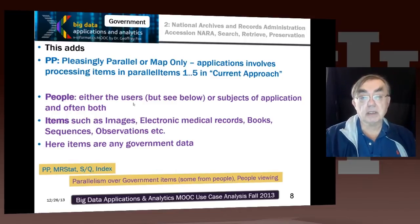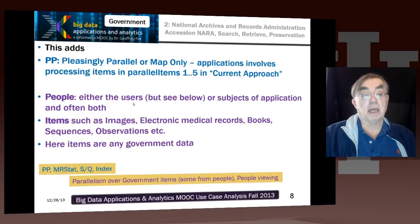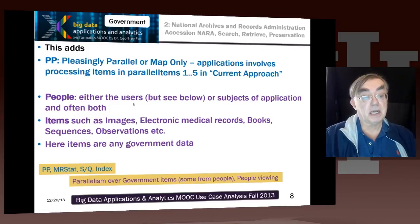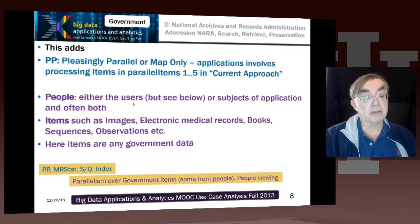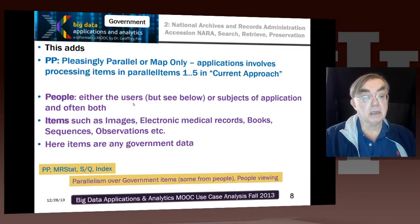Here we have some comments on the classification. The pleasingly parallel classification is called the MapOnly example in the MapReduce framework. It should actually be items one through three and five in the current approach, because item four — making the index — is not pleasingly parallel. Some parts of it are, but the overall making of an index has some global issues attached to it for obvious reasons, so it would not typically be called pleasingly parallel. However, taking each data set and making sure it is using a modern format is pleasingly parallel, because you do not need to integrate across data sets — you just do the same thing for every item in the data.